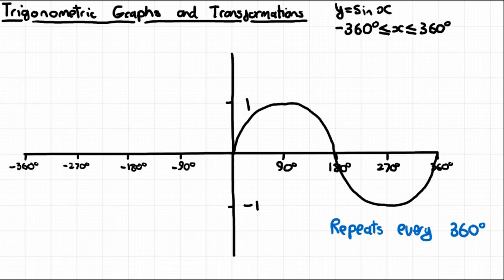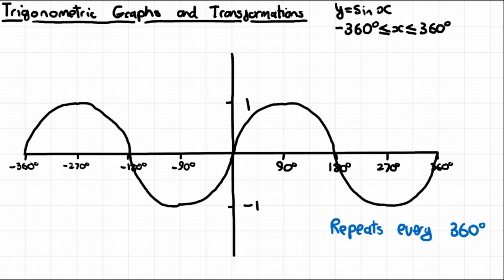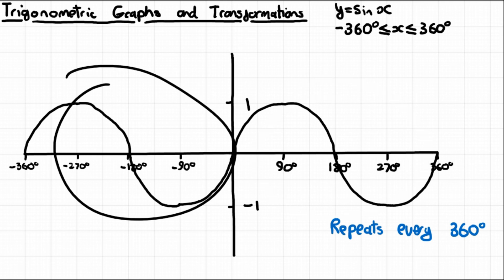If you need to sketch negative degrees — from -360 to 0 — it's the same shape but on the opposite side of the axis. It goes down to -1 at -90 degrees, back to 0 at -180, up to 1 at -270, and back to 0 at -360. The 360-degree periodicity still applies: 1 occurs at 90 degrees and again at 90 minus 360, which is -270.